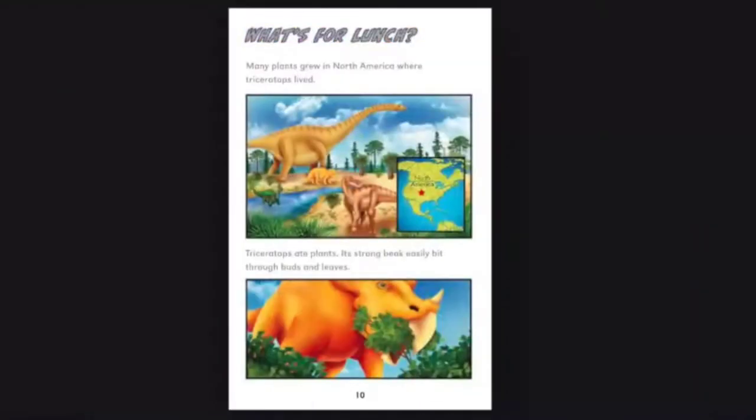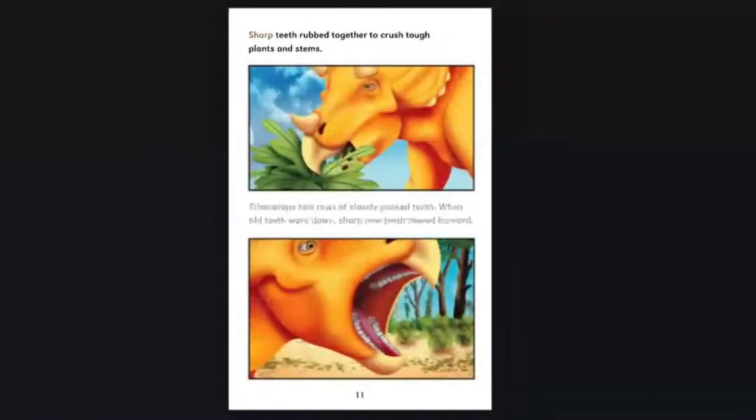What's for lunch? Many plants grew in North America, where Triceratops lived. Triceratops ate plants. Its strong beak easily bit through buds and leaves. Sharp teeth rubbed together to crush tough plants and stems. Triceratops had rows of closely packed teeth. When old teeth wore down, sharp new teeth moved forward.